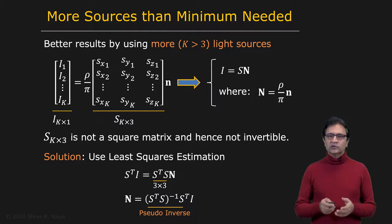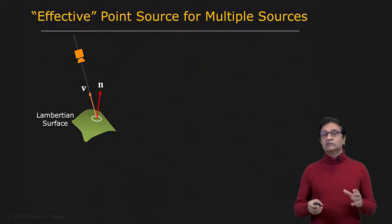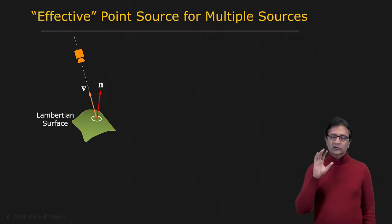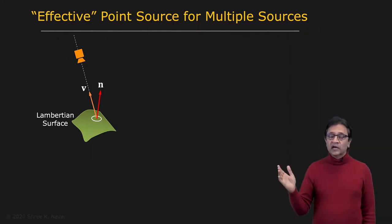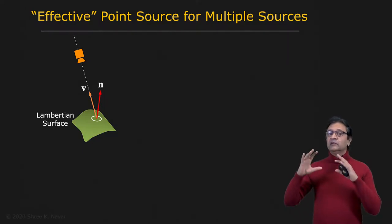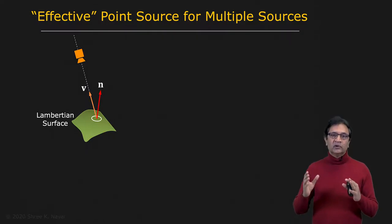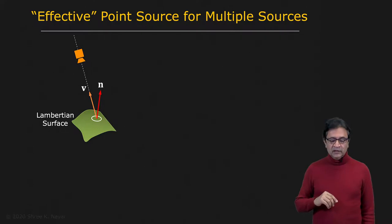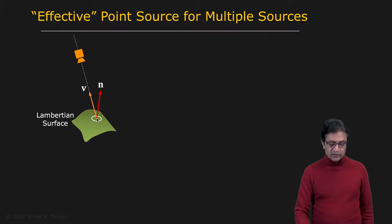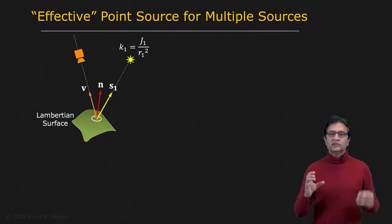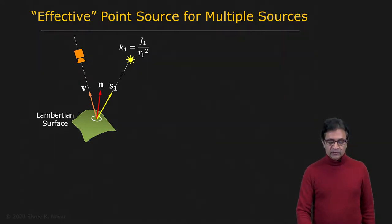Now let's talk about a useful property of light sources for Lambertian surfaces. It turns out that if you have a large number of light sources, or even an extended area light source, all on at the same time, they can be replaced with a single equivalent point light source — but only in the case of Lambertian surfaces. This is what we call the effective point light source for multiple sources.